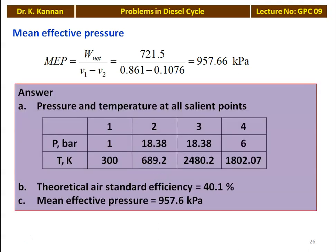The answers to the problem: pressures — P1 equals 1 bar, P2 equals P3 equals 18.38 bar, P4 equals 6 bar. Temperatures — T1 equals 300 Kelvin, T2 equals 689.2 Kelvin, T3 equals 2480.2 Kelvin, T4 equals 1802.07 Kelvin. The air standard efficiency is 40.1% and the mean effective pressure is 957.6 kilo Pascal.